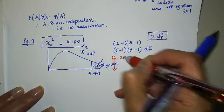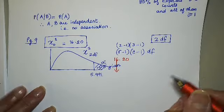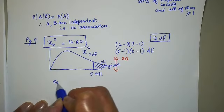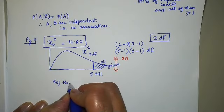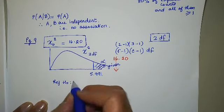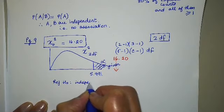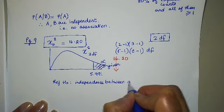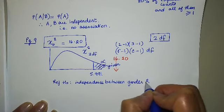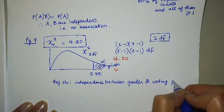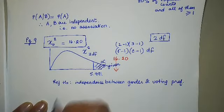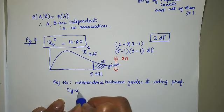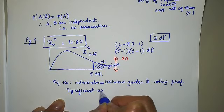And my test statistic is 16.20. So that falls in the rejection region. 16.20 falls in the rejection region. So this time, reject H-naught, which says that there is independence between gender and voting preference.